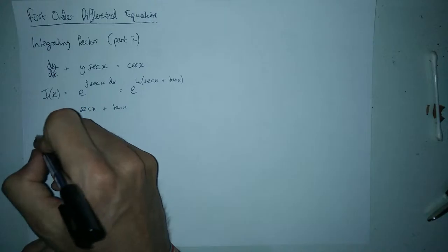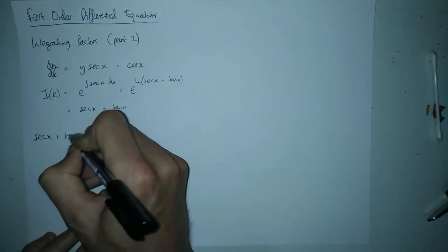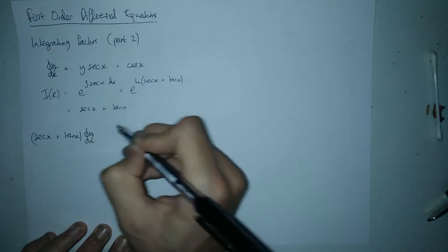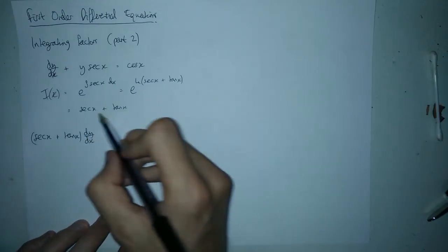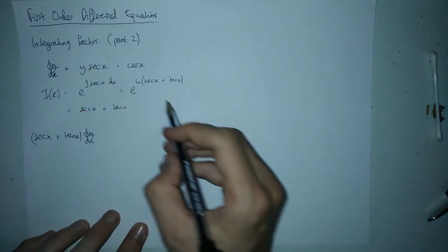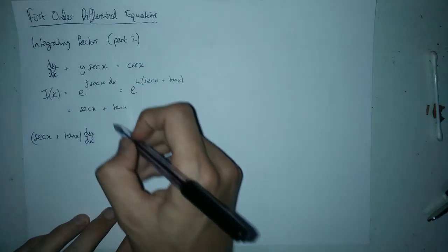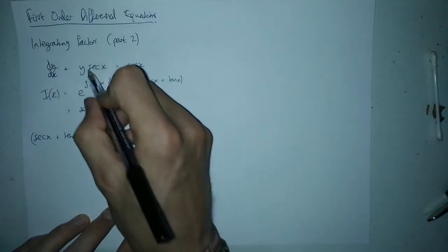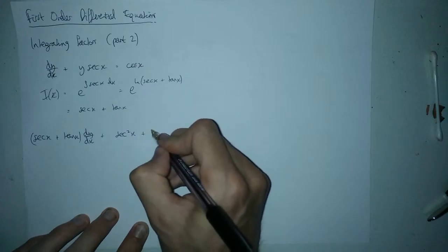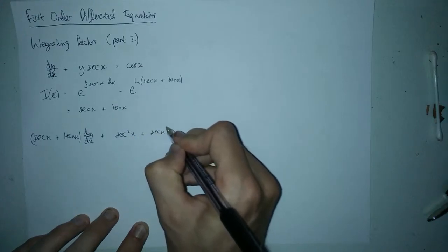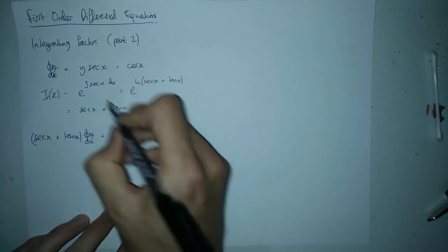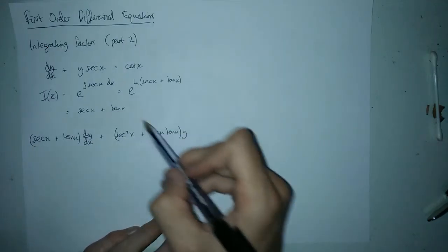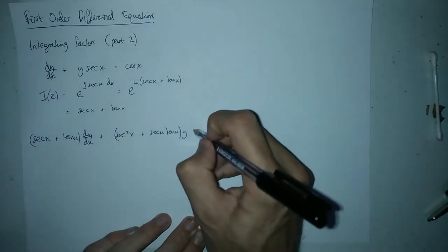We multiply the whole equation by sec x + tan x. So we get (sec x + tan x) times dy/dx, and then we need to do sec x times y times sec x. So sec x times sec x is sec²x, and sec x times tan x is sec x tan x, and we put the y in there.